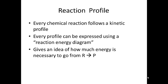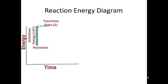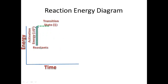Let's talk about reaction energy diagrams. Every reaction has a profile — a kinetic profile. We just talked about kinetics with R being converted into P, or reactants being converted into products. We can express this profile using what we call a reaction energy diagram. It gives us an idea of how much energy is necessary to go from reactants to products. The curve expresses how much energy it takes to go from reactants, over the curve, to products.